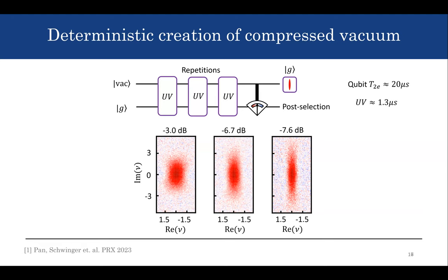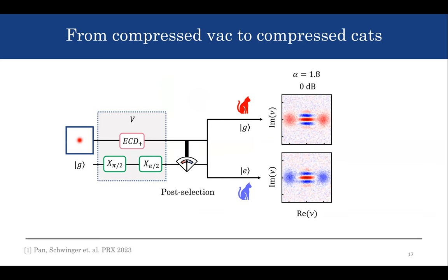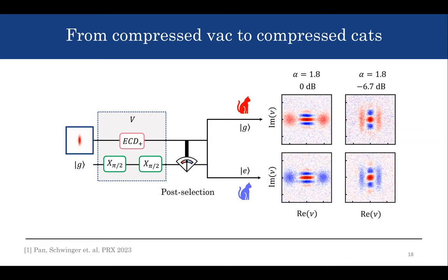Once we have a compressed vacuum state, it is quite easy to go to a cat state. We play another V-gate, which gives a state where you end up with an even cat state on the ground state and an odd cat state on the excited state of the transmon. Post-selecting then generates the cat state. Starting with a compressed vacuum instead gives a compressed cat state. Here we show experimental data of a compressed cat state with alpha 1.8 and a corresponding degree of compression.